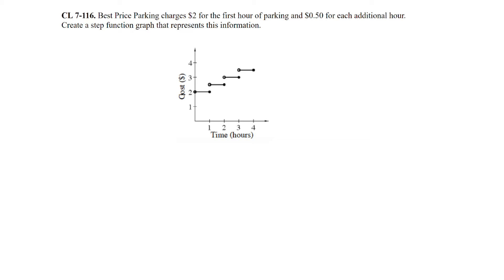Question 116: Best Price Parking charges $2 for the first hour and 50 cents for each additional hour. Create a step function graph. At time 0, there's an open circle — you haven't parked yet. Once you start parking, the cost is $2 for the first hour. Between hours 1 and 2, the cost is $2.50, with an open circle at hour 1. Right after 2 hours, it steps up to $3. Make sure to label your x and y axes.